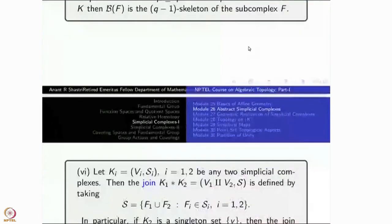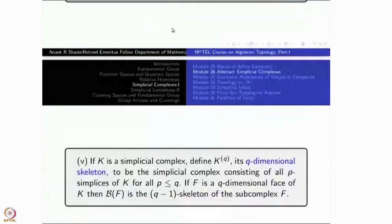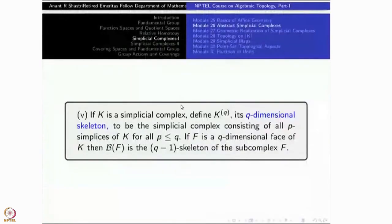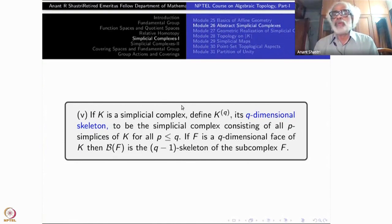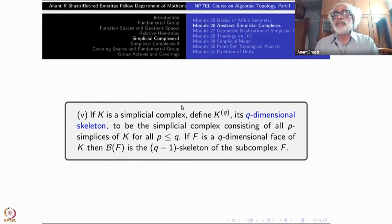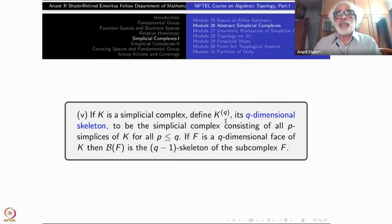This is also an important example. If you start with a Simplicial Complex and look at all faces of dimension less than or equal to one particular number Q, automatically all the faces of whatever you have taken will be also there. Therefore, this will be a sub-complex. This sub-complex is called the Q-dimensional skeleton of K, and the notation is K^[Q].